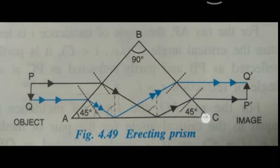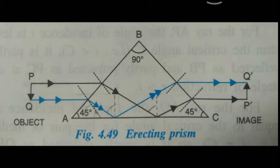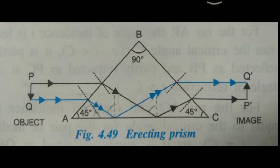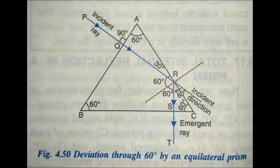On face BC, the angle of incidence is very small — less than the critical angle — so the rays undergo refraction as they go from the denser medium back to the rarer medium. The ray of light exits the prism and thereby an erect image P'Q' is formed of the inverted object PQ.